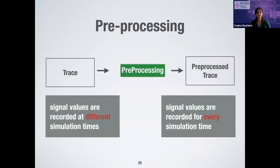In the pre-processing step, the input trace has signal values recorded at different simulation times, which we call timestamps. The pre-processing creates a new trace in which signal values are recorded for every simulation timestamp, and this conversion relies on an interpolation function that generates missing signal values.